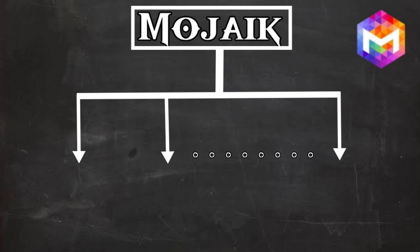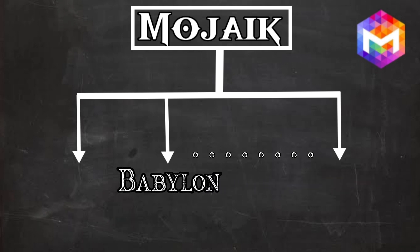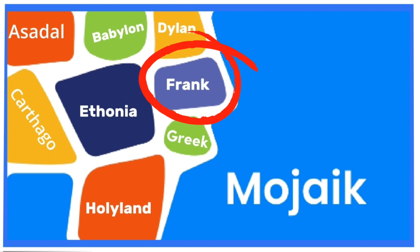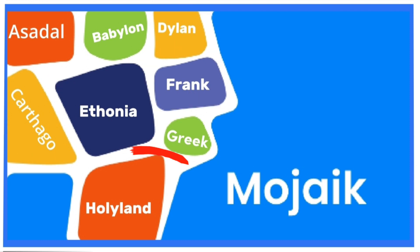The next blockchain to be launched on Mojak is Babylon, scheduled for October 10, 2023. There are many other blockchains to be launched on the Mojak platform, which include Athonia, Dillon, Karthago, Frank, Greek, and Holy Land. These names are not finalized, and regular announcements will be made for the launching dates of the other blockchains.